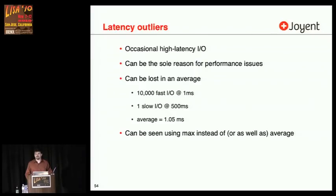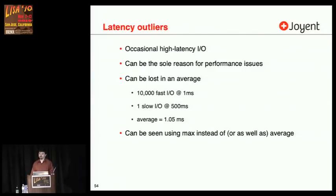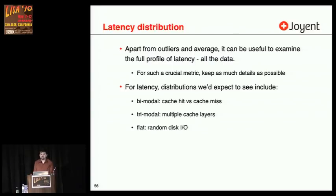You can use a max instead of or as well as average — at least that would pick up the outliers. You wouldn't pick up the distribution. It's the latency distribution that I'd be more interested in — the full profile of latency, all the data. I spent a while talking about why latency was so useful — let's not suddenly toss it out. We want to examine all of it. If you think about it, there are some latency distributions that are probably going to happen in the real world: bimodal — where I have a low level from one cache and a higher level from the next level; trimodal with multiple cache layers; a flat distribution for random disk IO.